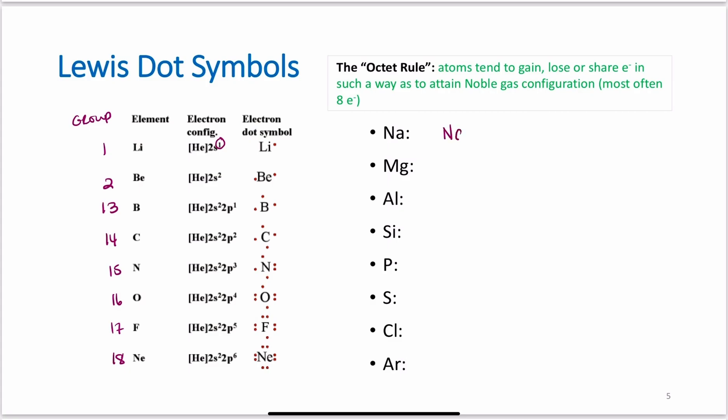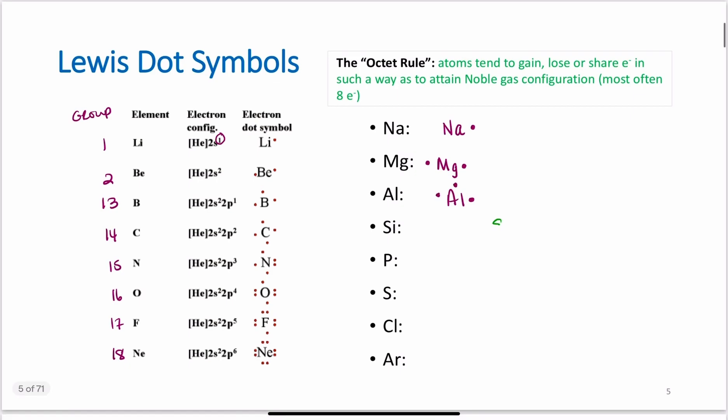So if I have sodium, it has one valence electron, I'm going to write one dot. Magnesium, two valence electrons, two dots. Aluminum, three valence electrons, three dots. Silicon, four valence electrons, four dots. Phosphorus, five valence electrons, one, two, three, four. Now I'm going to pair them up because I have to. Five dots.